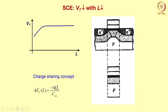Formally: ΔVt(L) = -ΔQL/Cox, with a negative sign because gate-control charge is reduced. ΔQL is the magnitude of charge that moves out of gate control at source and drain ends. To derive the equation, we introduce channel length L and depletion width yd for a plane MOS capacitor.